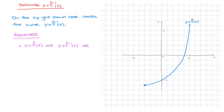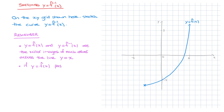The second important thing to remember is that if y equals f of x passes through a point with coordinates a and b, then its inverse function — the curve y equals the inverse of f of x — will pass through the point with coordinates b, a.